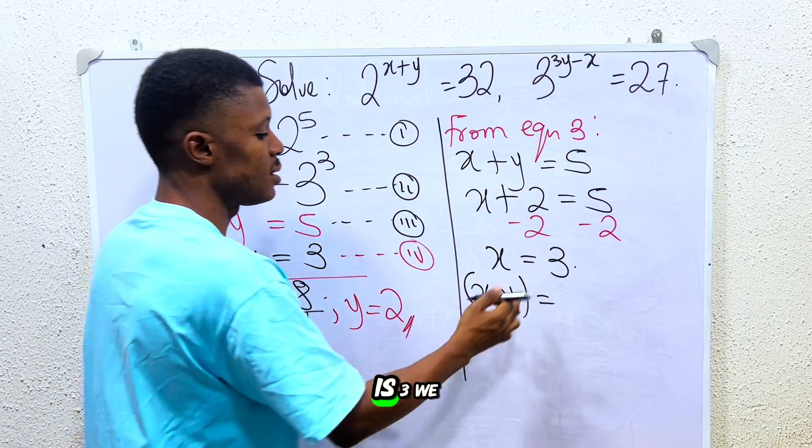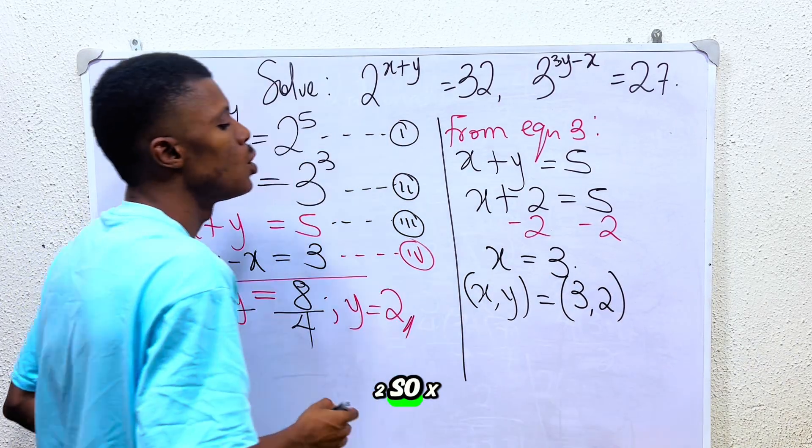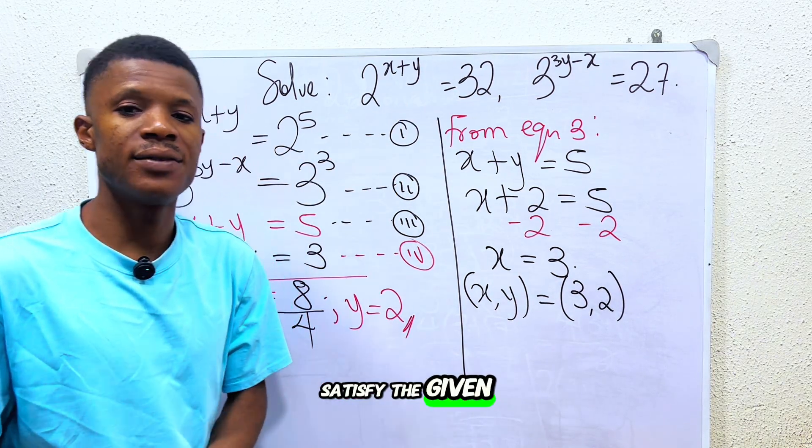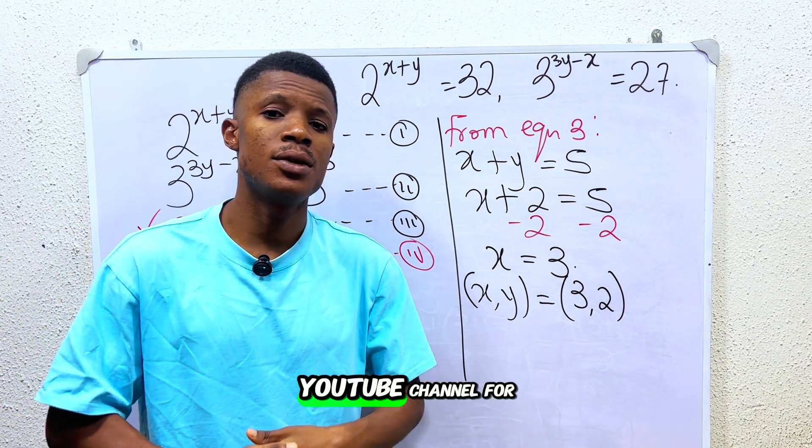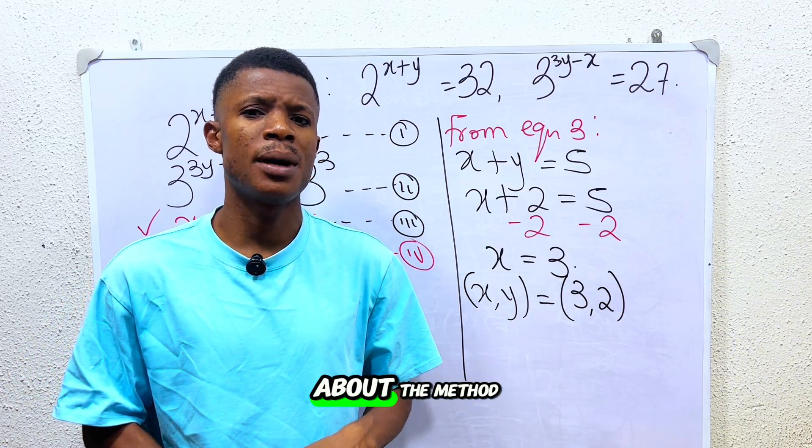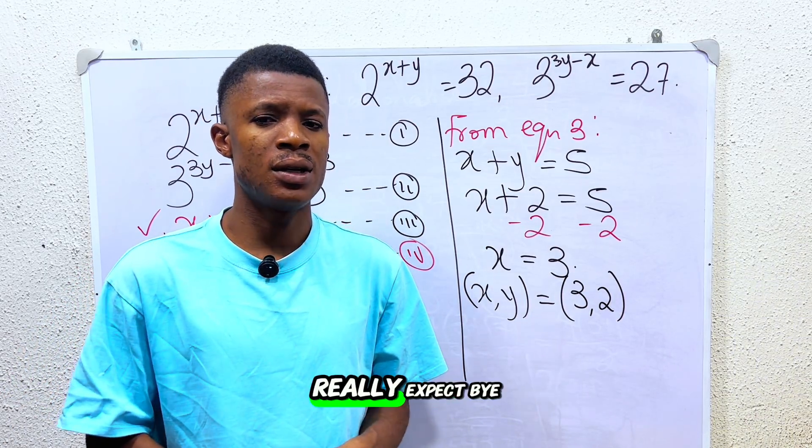So at the end, the value for x and y will be x is 3 and y is 2. So x is 3, y is 2 is the only number that can satisfy the given equation. Subscribe to my YouTube channel for more exciting tips like this. Comment your thoughts about the method. Do you really like it and what do you really expect? Bye.